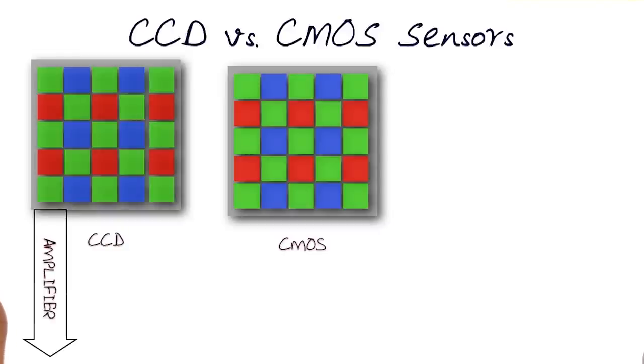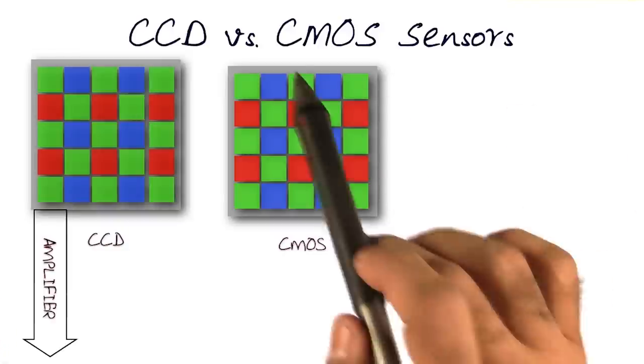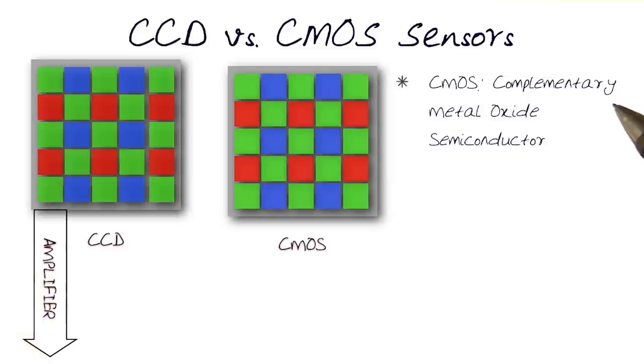Now, let's look at another whole concept, and that is the use of a CMOS sensor. CMOS stands for complementary metal oxide semiconductor.